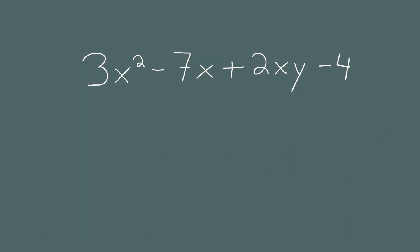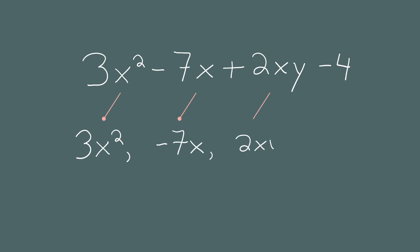In this algebraic expression, there are four terms: 3x squared, negative 7x, 2xy, and negative 4.